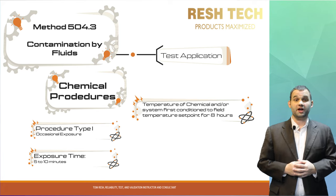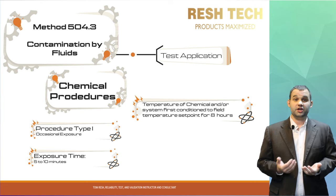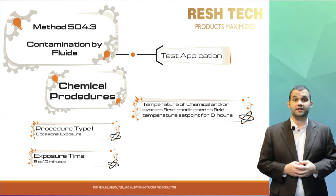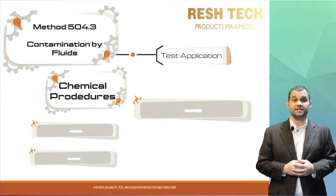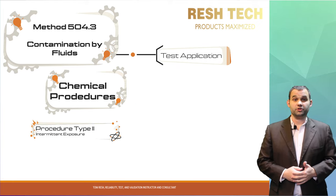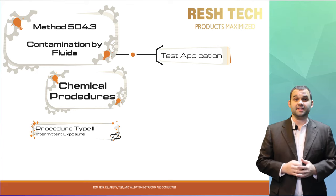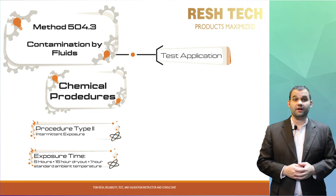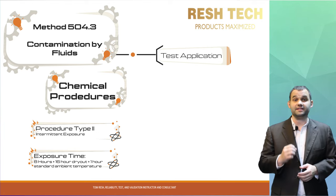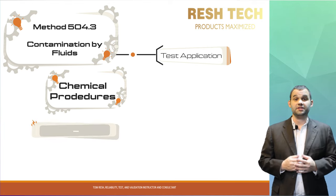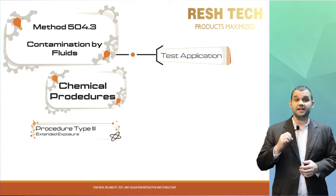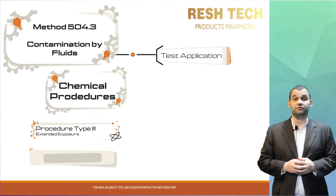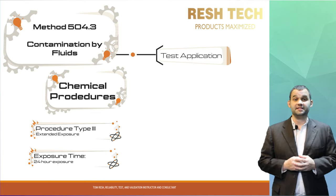Standard ambient is called out quite a lot in MIL-STD-810H and is used heavily when discussing ambient conditions for performing pre- and post-testing. For intermittent chemical exposures, it is suggested that the system is subjected to a continuous exposure to the test chemical for eight hours, then left to air dry for 16 hours, followed by a one-hour soak at standard ambient conditions. For extended contamination, MIL-STD-810H suggests exposing the system to a chemical continuously for at least 24 hours.